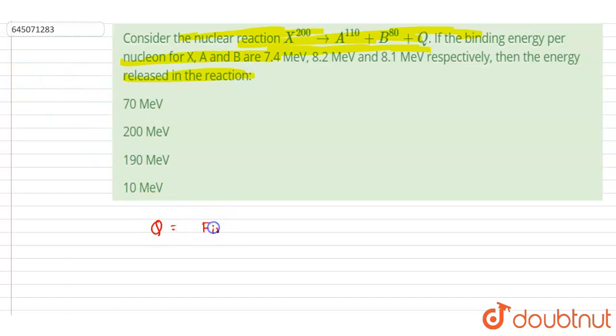You can get Q because it is given that binding energy per nucleon are 7.4, 8.2, and 8.1, all right? So if I calculate the binding energy for the product, I will write down for A, the number of nucleons in A is 110.